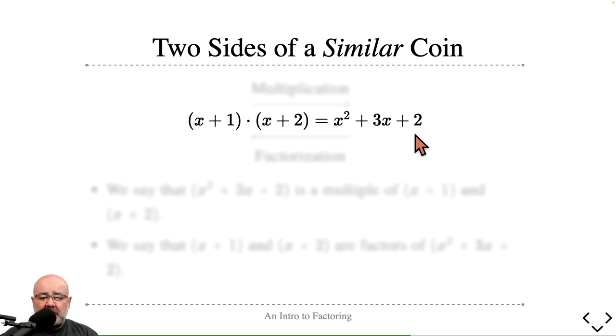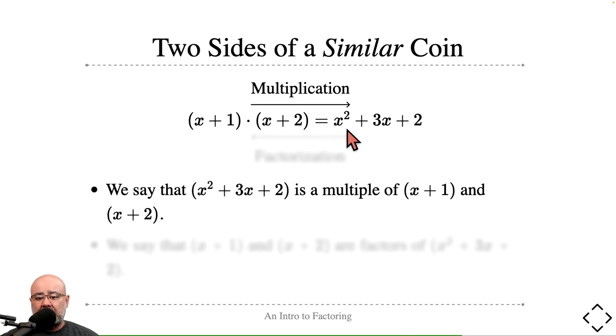Now that you've had a chance to do that, the process of going from the left side to the right side is called multiplication, just like in the previous slide. But instead of doing it with numbers, now we're doing it with algebraic structures or binomials or polynomials in particular.